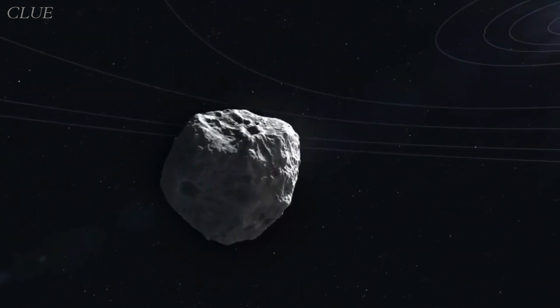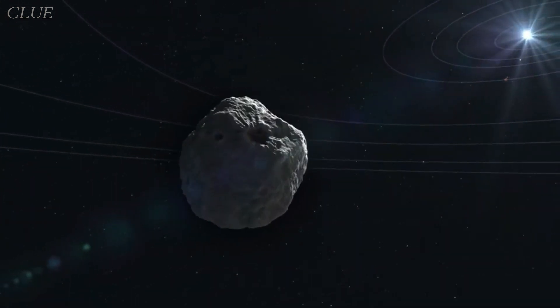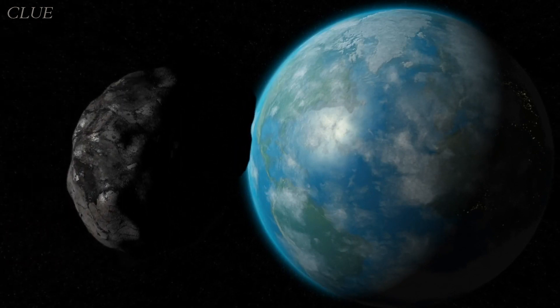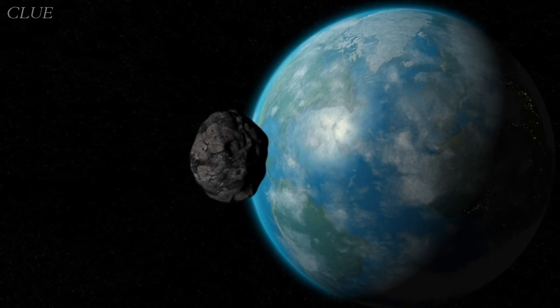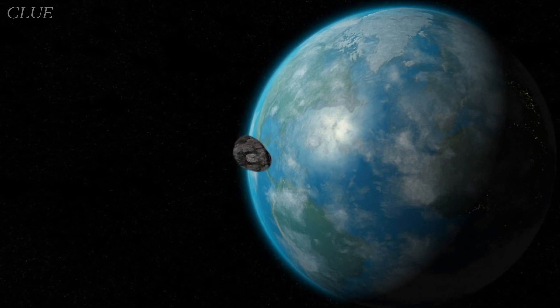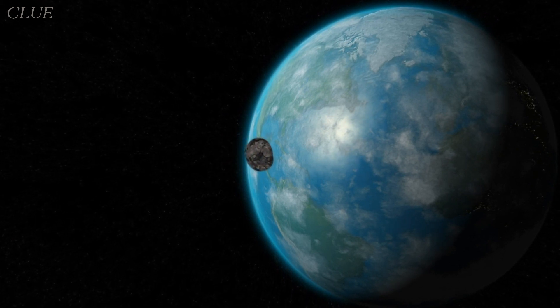Another reason Bennu was chosen as a destination was availability of pristine carbonaceous material. This carbonaceous material is an elemental cornerstone for the organic molecules that is essential for life. It's also the kind of matter that predates Earth's existence.